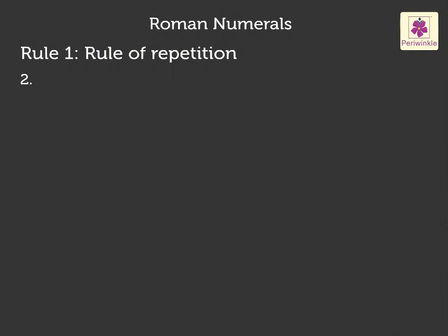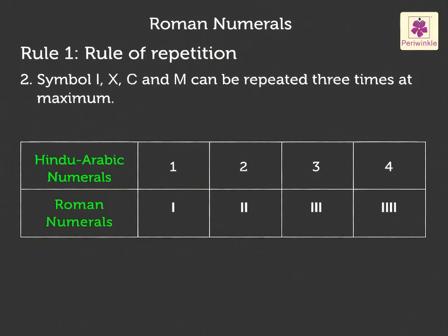2. Symbols I, X, C and M can be repeated three times at maximum. For example, we can write 1 as I, 2 as II, and 3 as III in Roman system.